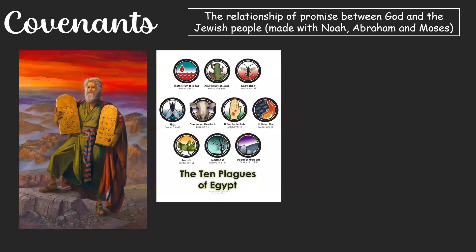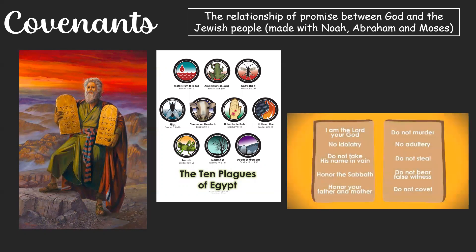On their journey to the promised land, the Israelites stopped at Mount Sinai. It was here that Moses received the Ten Commandments, found in Exodus 20. These commandments are about loving God and treating others well. They include commands such as you shall not murder and honour your mother and father.